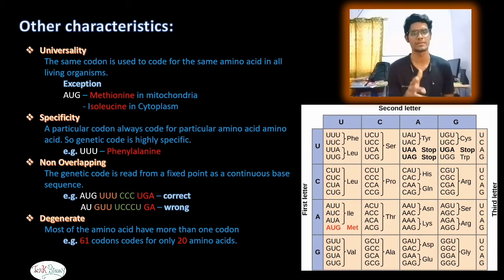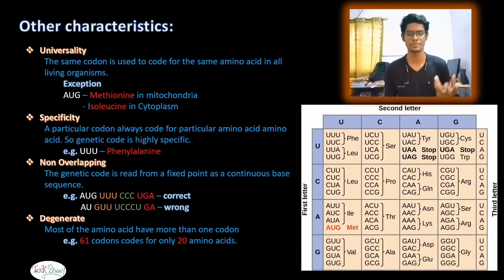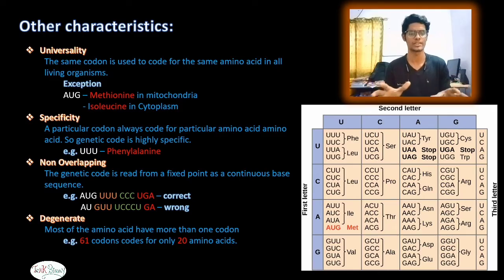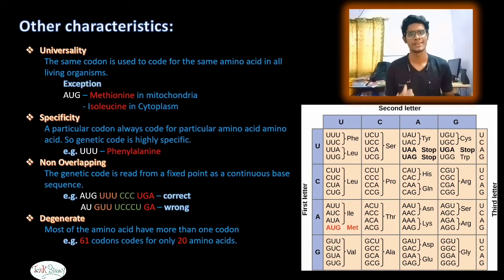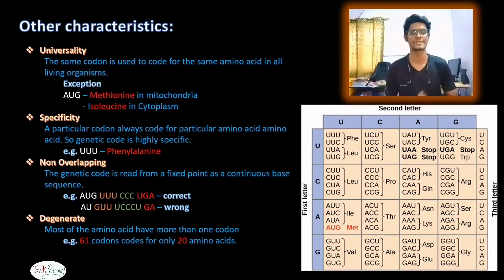The fourth characteristic is degeneracy. Most amino acids have more than one codon. We know there are 61 codons, but only 20 amino acids. So multiple codons — up to 45 extra — can code for the same amino acid. That is degeneracy.